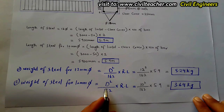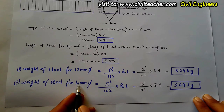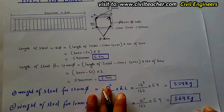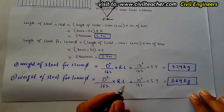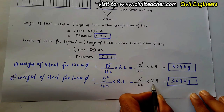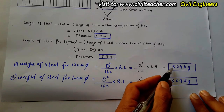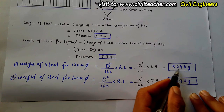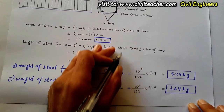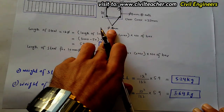For the 10 mm top bars, the same formula: D² ÷ 162 × running length. So: 10² ÷ 162 × 5.9 = 3.64 kg. The difference in weight between the two sets of bars is because one uses 10 mm diameter and the other uses 12 mm diameter.